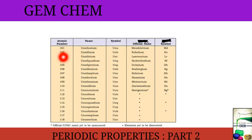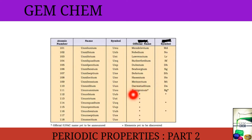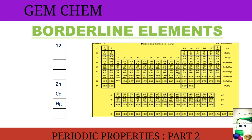The first elements from 101 to 111 have other names based on the names of scientists. Element 101 is Mendelevium, 102 is Nobelium, 103 is Lawrencium, 104 is Rutherfordium, 105 is Dubnium, 106 is Seaborgium, 107 is Bohrium, 108 is Hassium, 109 is Meitnerium, 110 is Darmstadtium, and 111 is Roentgenium.